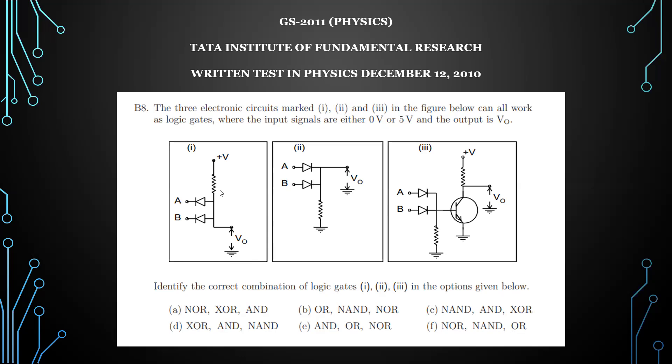This first circuit is an example of an AND gate, because AND gates give you high voltage only when both inputs are high. When both A and B are high, both diodes will be reverse biased and the circuit cannot complete, so this voltage will come as output.